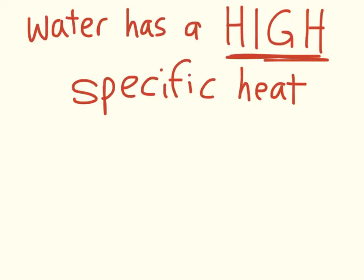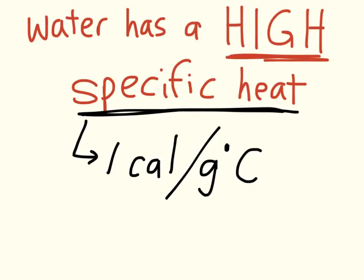Water specific heat is one calorie per gram per degree Celsius. Now you might be thinking, wow, what a convenient number. Well that's because the definition of calorie is the amount of heat it takes to raise the temperature of one gram of water by one degree Celsius.